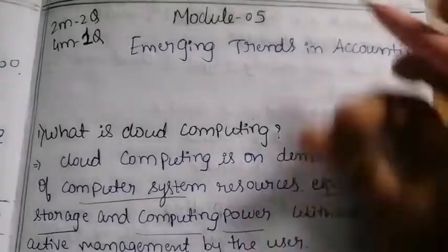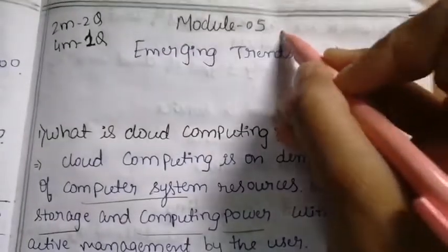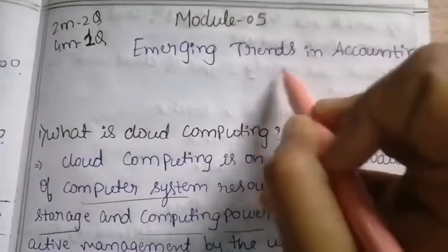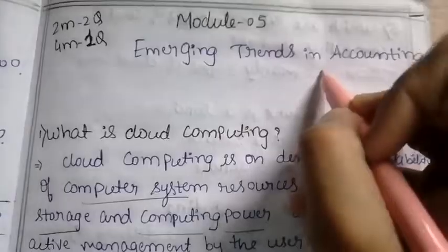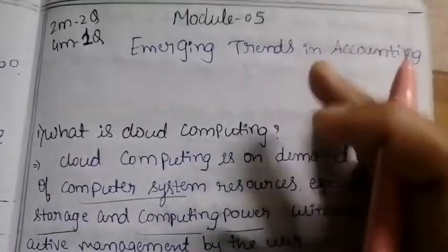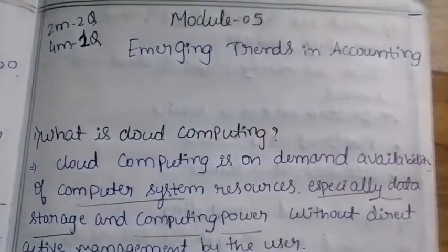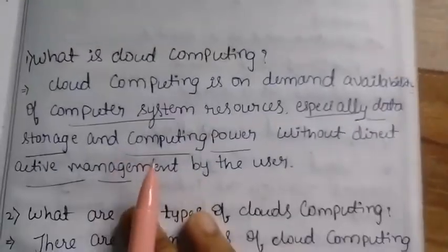Hi friends, in this video let us see Financial Accounting Module 5: Emerging Trends in Accounting. This chapter is fully theory only. Two marks — two questions; four marks — one question. Let us see what is the meaning of cloud computing.